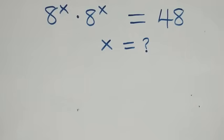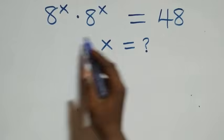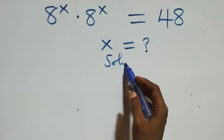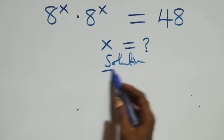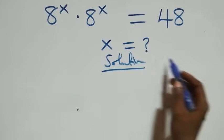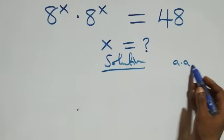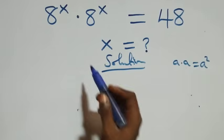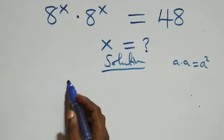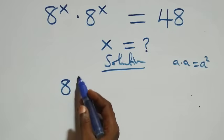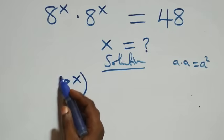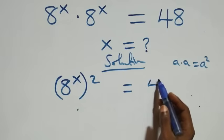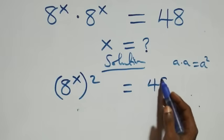Hello, you are welcome. Here we solve a nice exponential equation. What we have is a times a, which can be written as a squared. Multiplying here, we have a raised to power x, squared, equals 48.